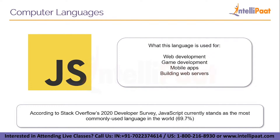JavaScript is used in web development, game development, mobile apps and building web servers. According to Stack Overflow's 2020 developer survey, JavaScript currently stands as the most commonly used language in the world, taking a whopping 69.7 percent of the share. JavaScript is a scripting language used to control the behavior of web pages. Coders can use it to construct dynamic web pages like animated pages, interactive maps and clickable buttons among other things. Combining HTML, CSS and JavaScript gives programmers more control over their websites and allows them to provide a better user experience in terms of navigability and readability.